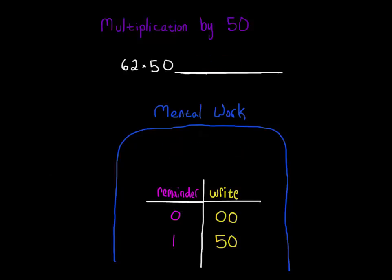Here's 62 times 50. 62 divided by 2 is 31 remainder 0. The even number should be a little bit easier. Remainder 0 means write double 0, so 62 times 50 is 3100.